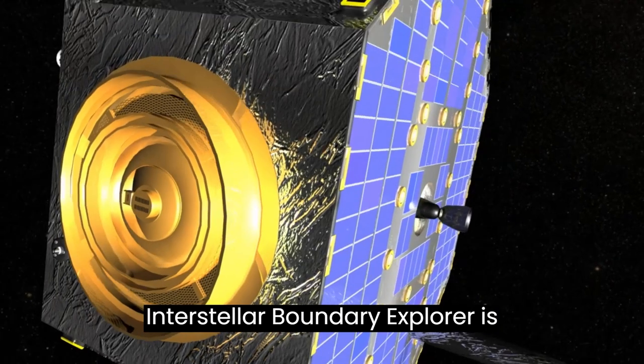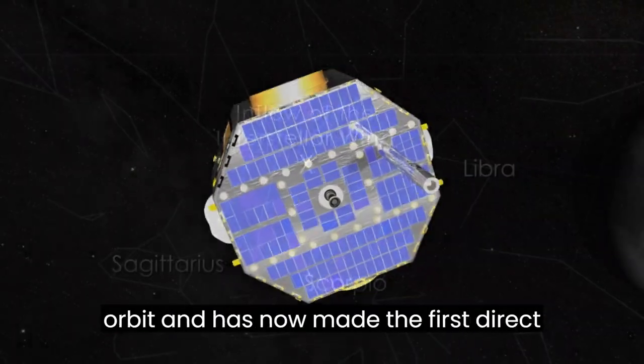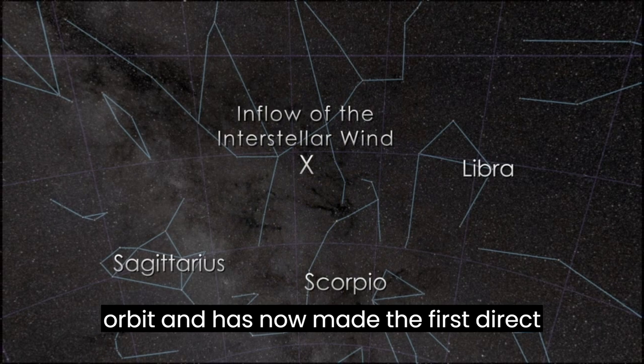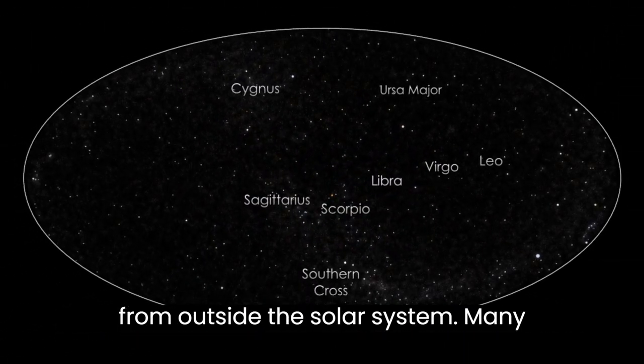IBEX, or the Interstellar Boundary Explorer, is designed to study this region from Earth orbit and has now made the first direct measurements of hydrogen, oxygen, and neon from outside the solar system.